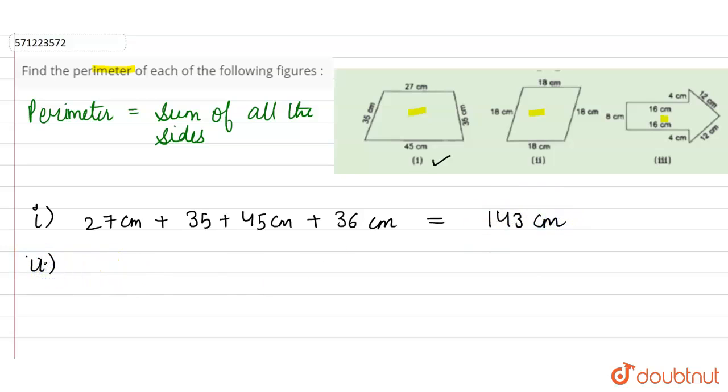Now second part: this is a rhombus, so the sum of all sides is 18 plus 18 plus 18 plus 18, which equals 72 centimeters. Therefore, the perimeter of the second figure is 72 centimeters.